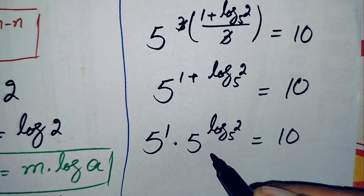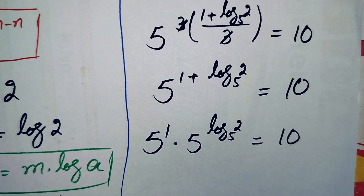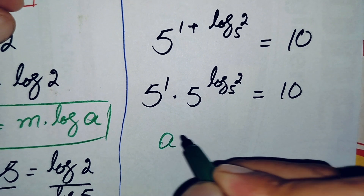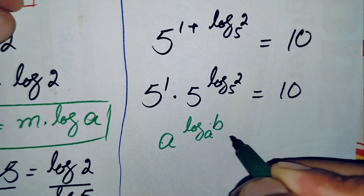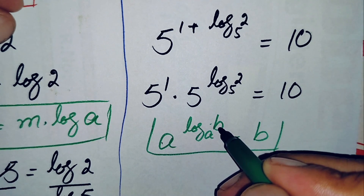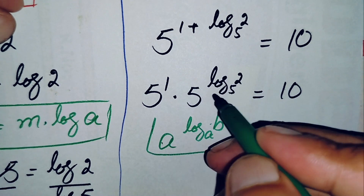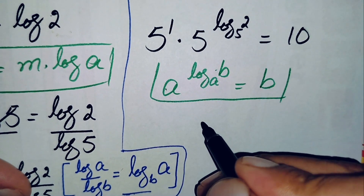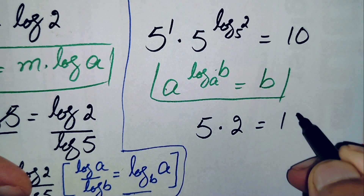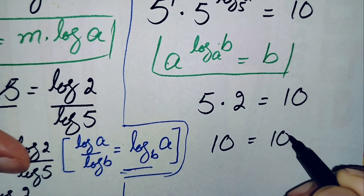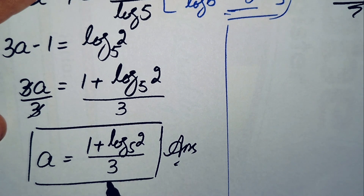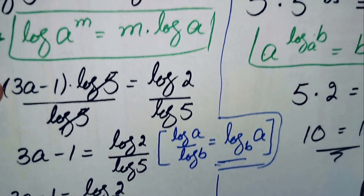Using the logarithm property that a raised to power log_a(b) equals b, the term 5^(log₅2) simplifies to 2. So the equation becomes 5 times 2 equals 10, which gives 10 equals 10. Both sides are equal, confirming that a equals (1 + log₅2) divided by 3 is the exact and correct value.